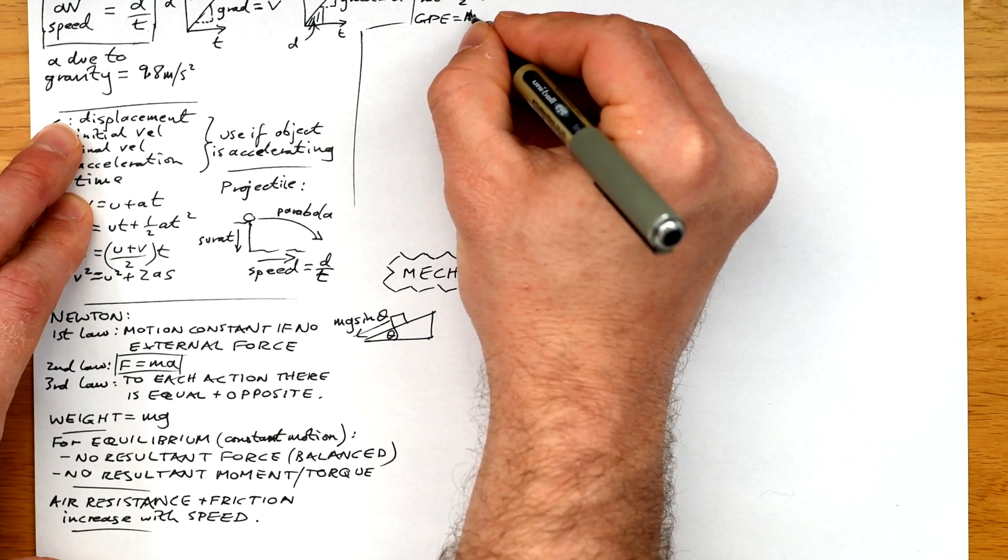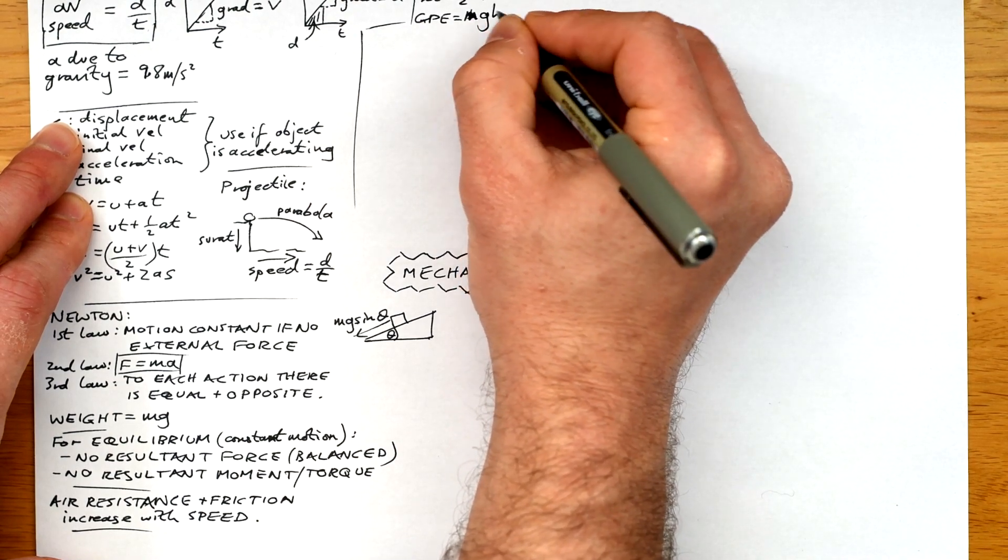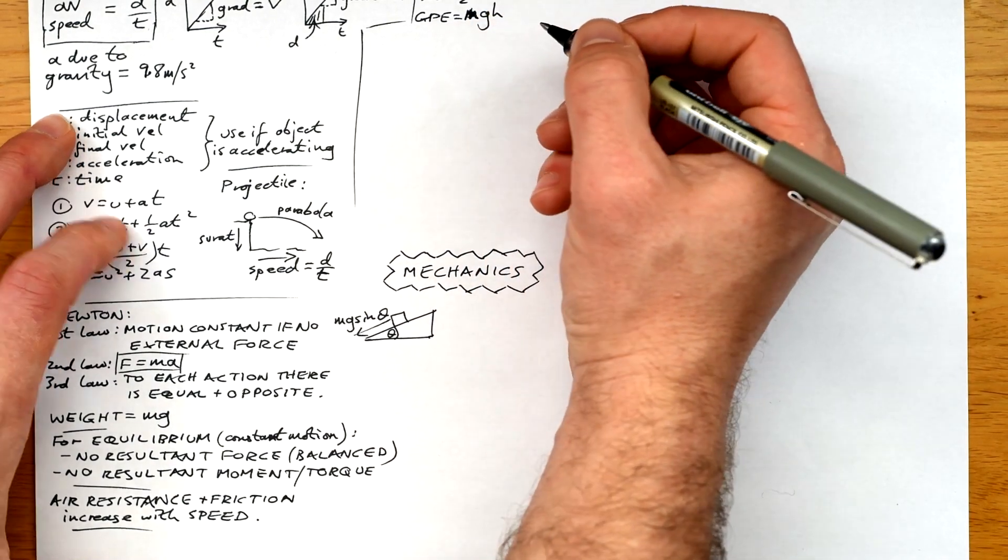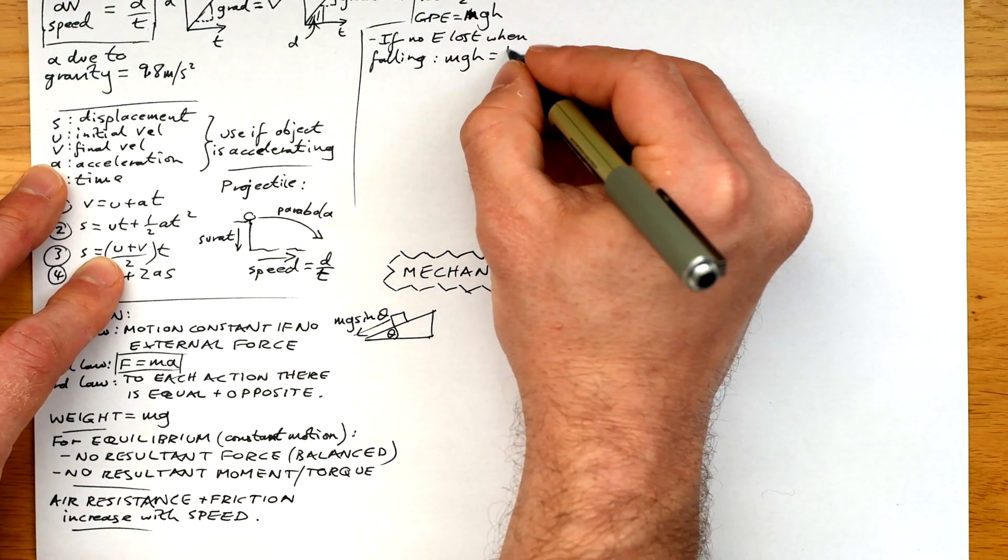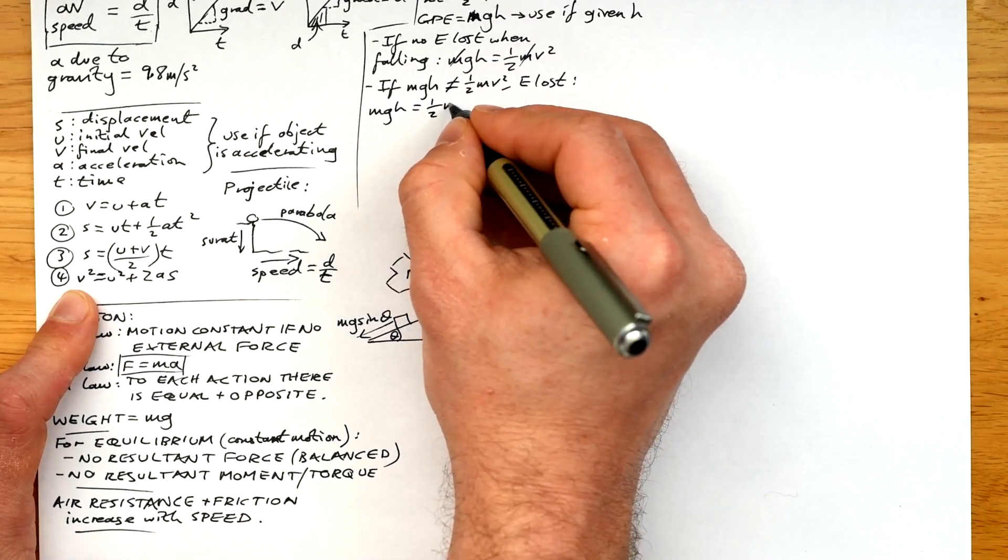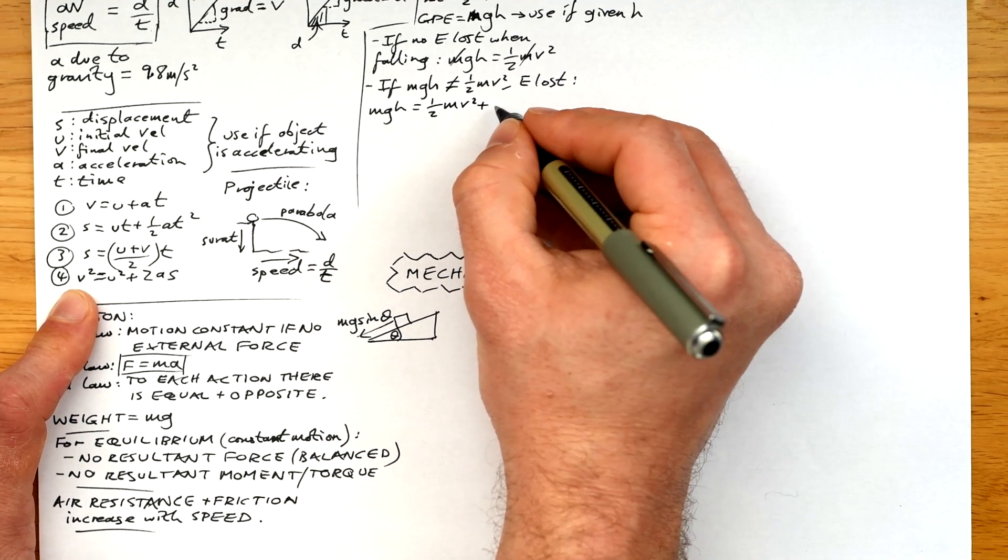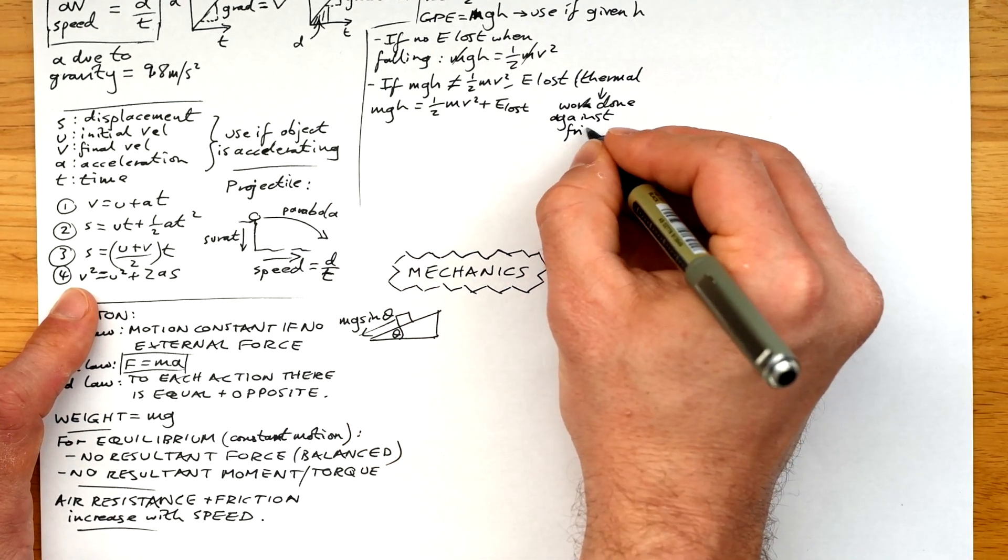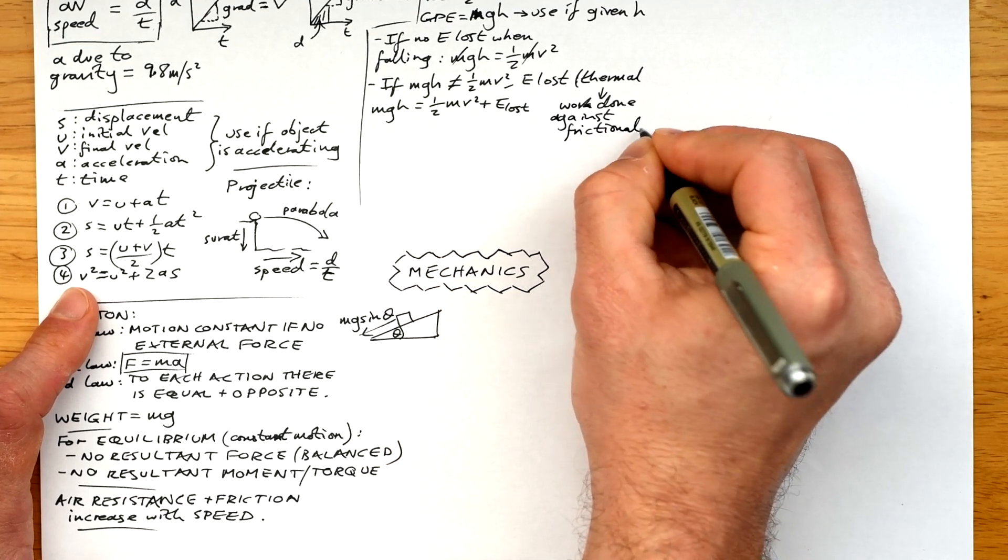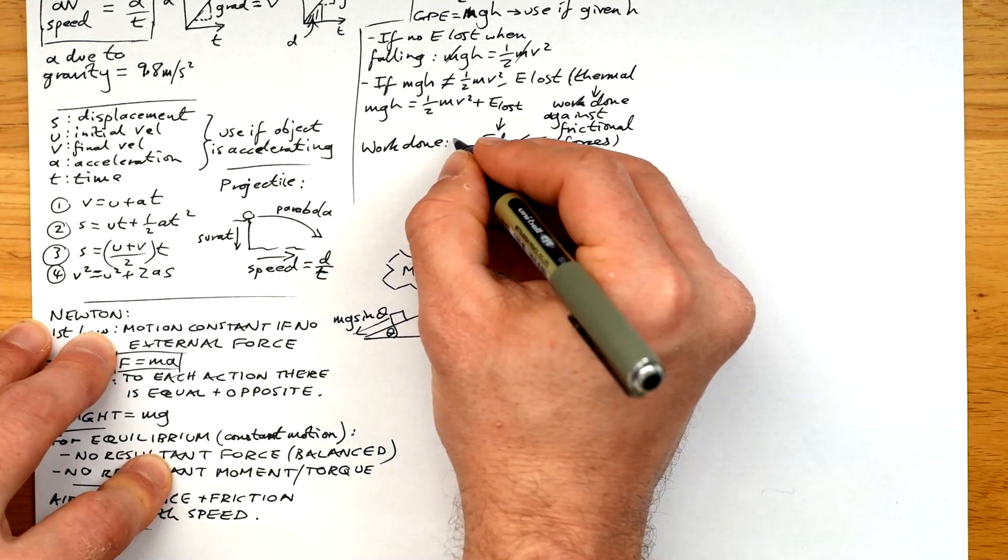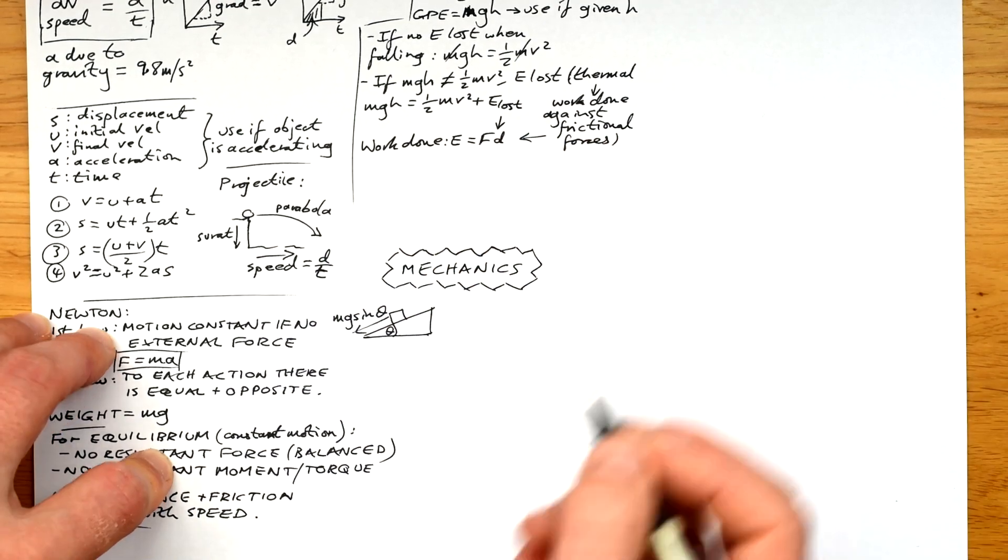All right, energy. Here we go. Kinetic energy is half MV squared. GPE is MGH. If we're given H, we pretty much know that we're going to use GPE. If there's no energy lost when something falls, then we know MGH equals half MV squared and the M's cancel. But if the GPE at the top does not equal the kinetic energy at the bottom, then energy is lost in the form of thermal energy or heat. And we can say that that's actually work done against frictional forces.